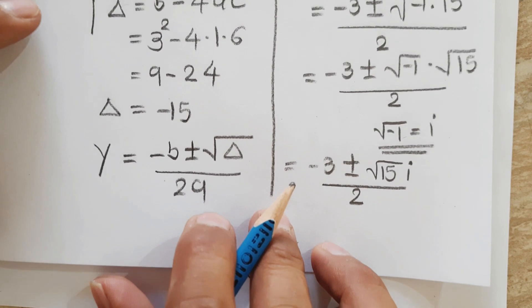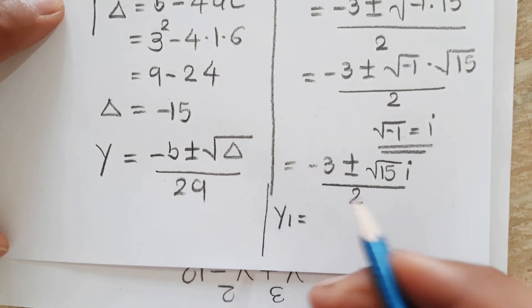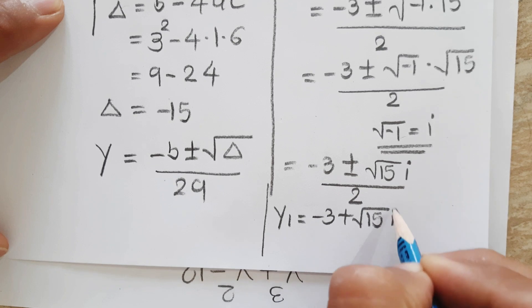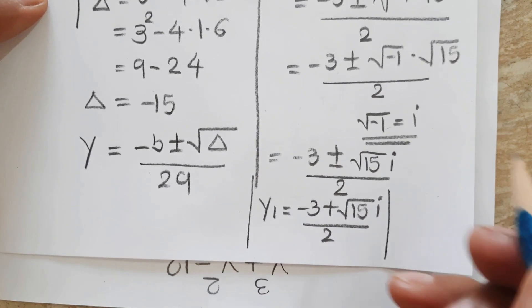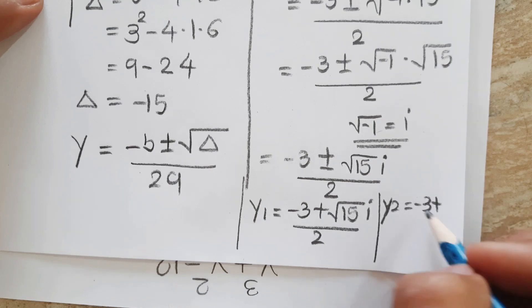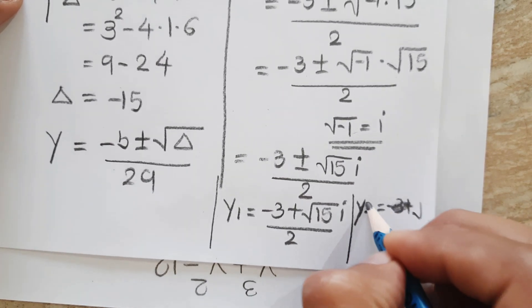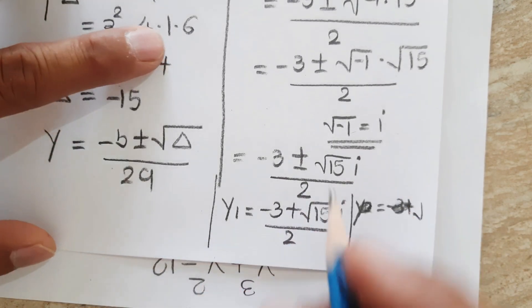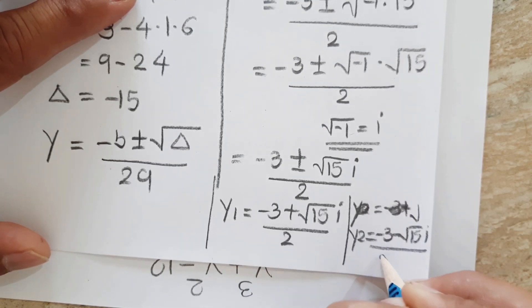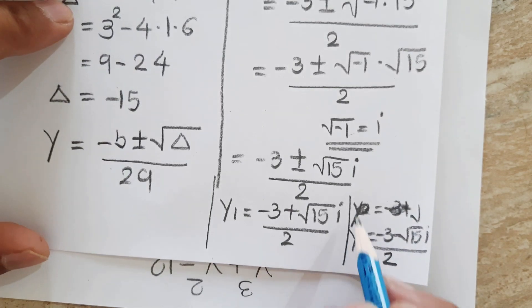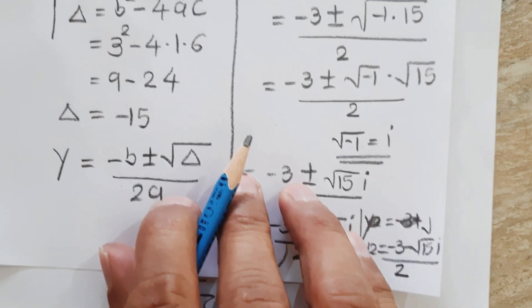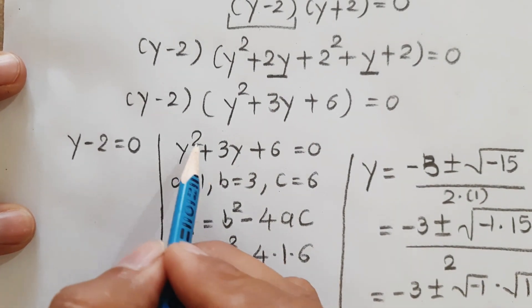So we have two solutions: y₁ = (-3 + i√15) / 2 and y₂ = (-3 - i√15) / 2. Since these are imaginary (complex) solutions, we reject them.